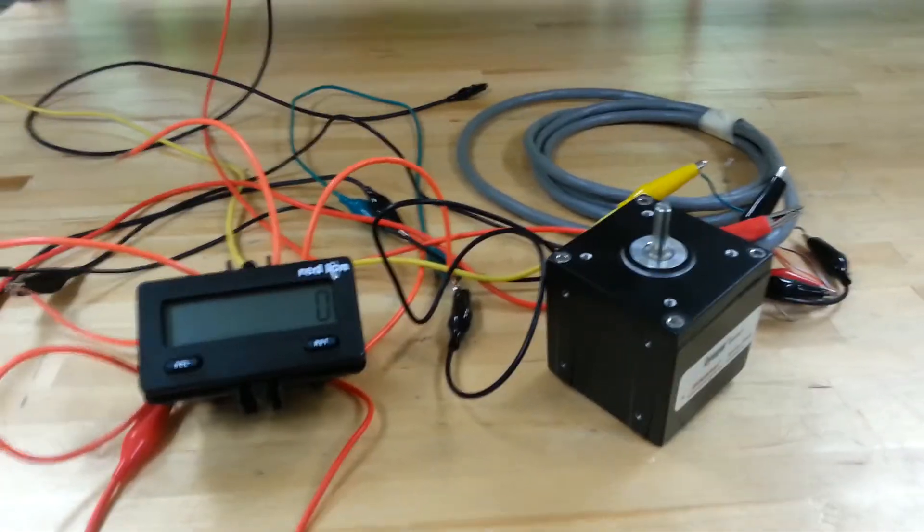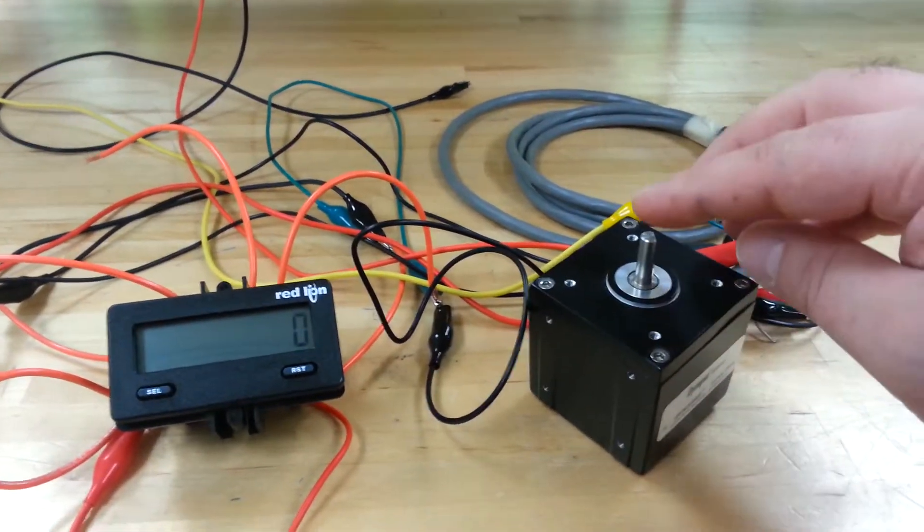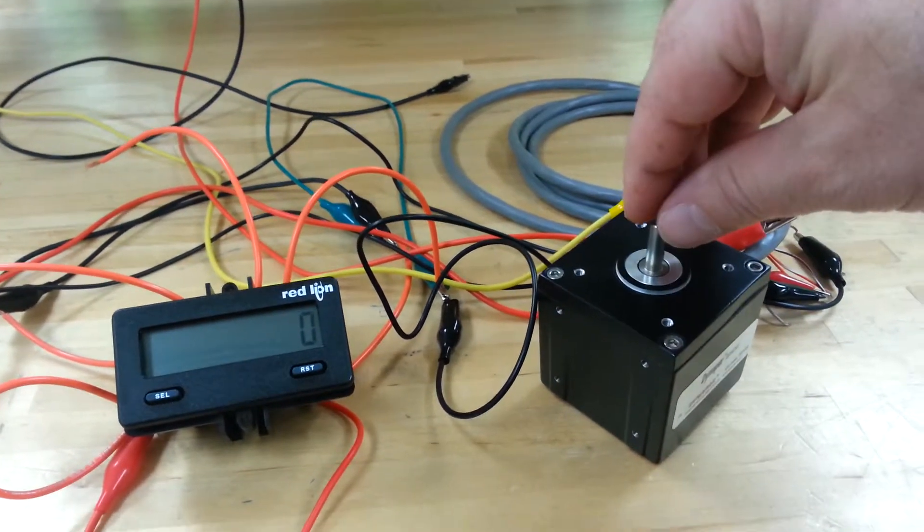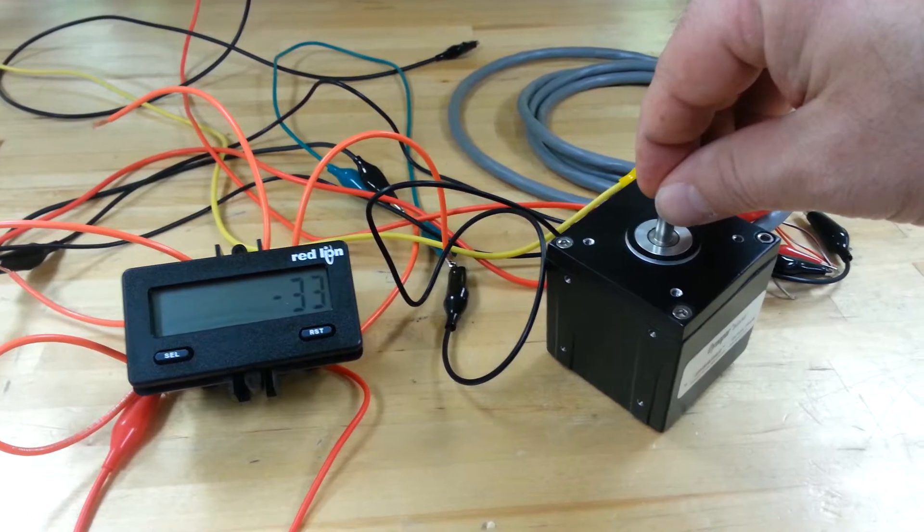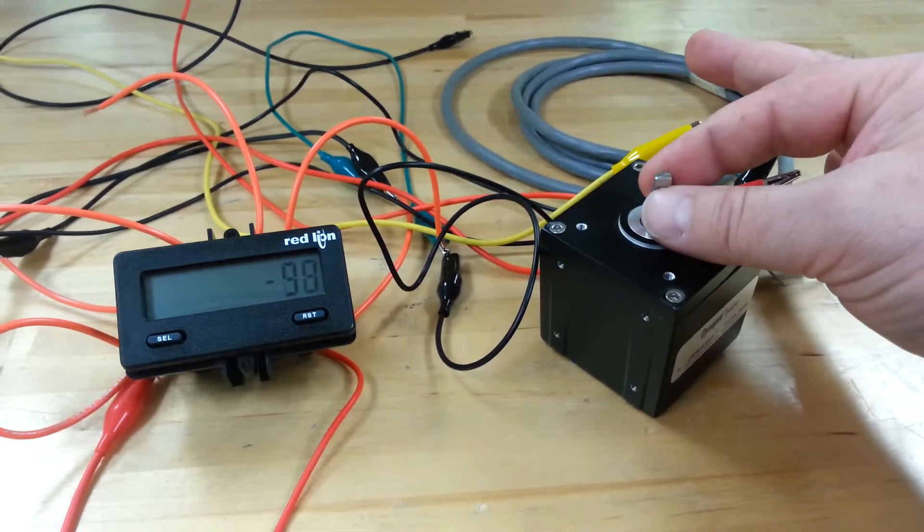This is an optical encoder. An optical encoder measures rotation. As a shaft rotates, it creates a series of on-off signals.